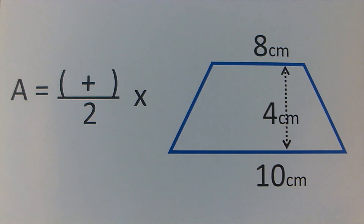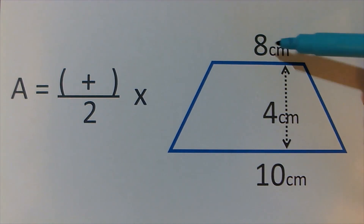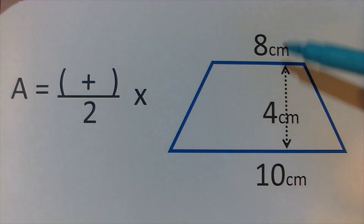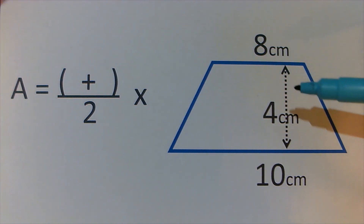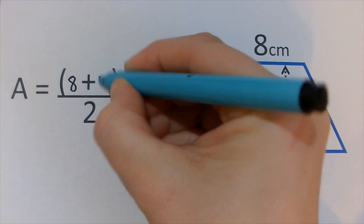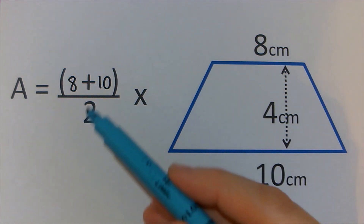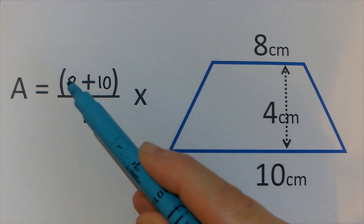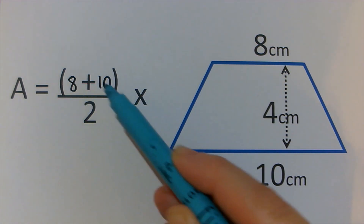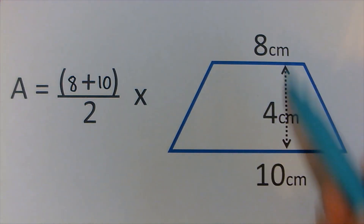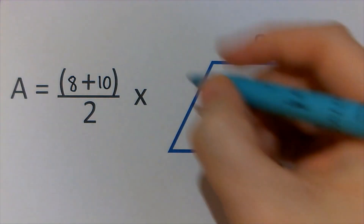OK, so let's do a real example. Half the sum of the parallel sides. So if these are the parallel sides, they need to go in here: 8 and 10. And we know the sum means add. Half the sum of the parallel sides times the distance between them.